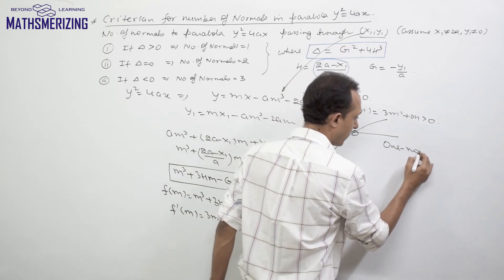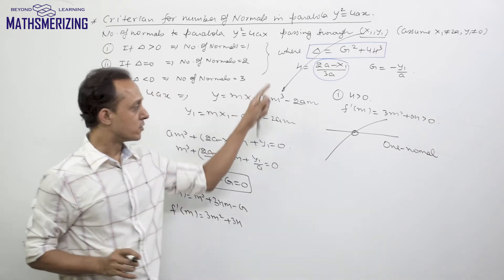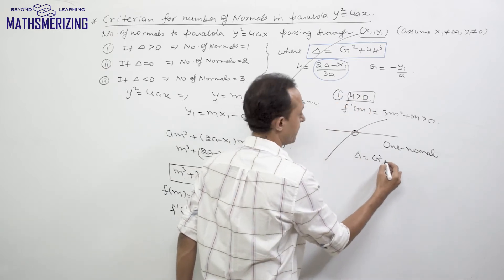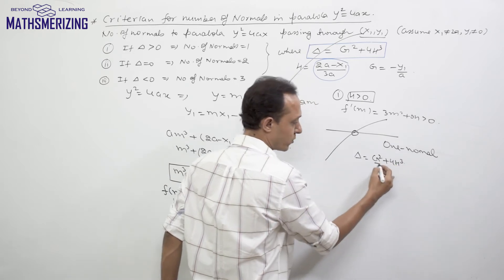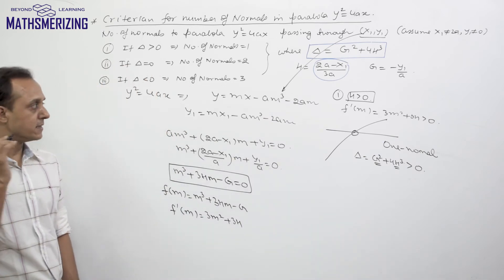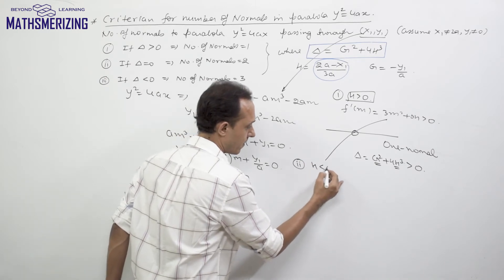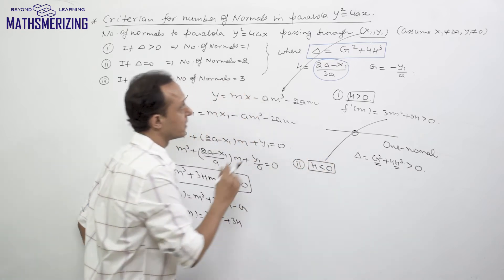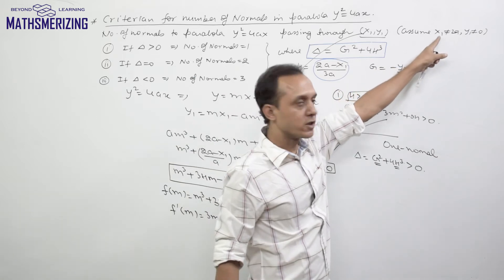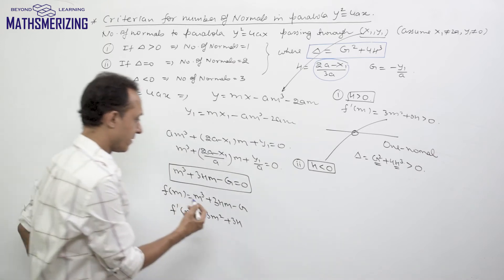When h > 0, delta = g² + 4h³ is always greater than 0 since both g² and h³ are positive. Now we consider the case when h < 0. We exclude h = 0 since we already took the condition x₁ ≠ 2a.